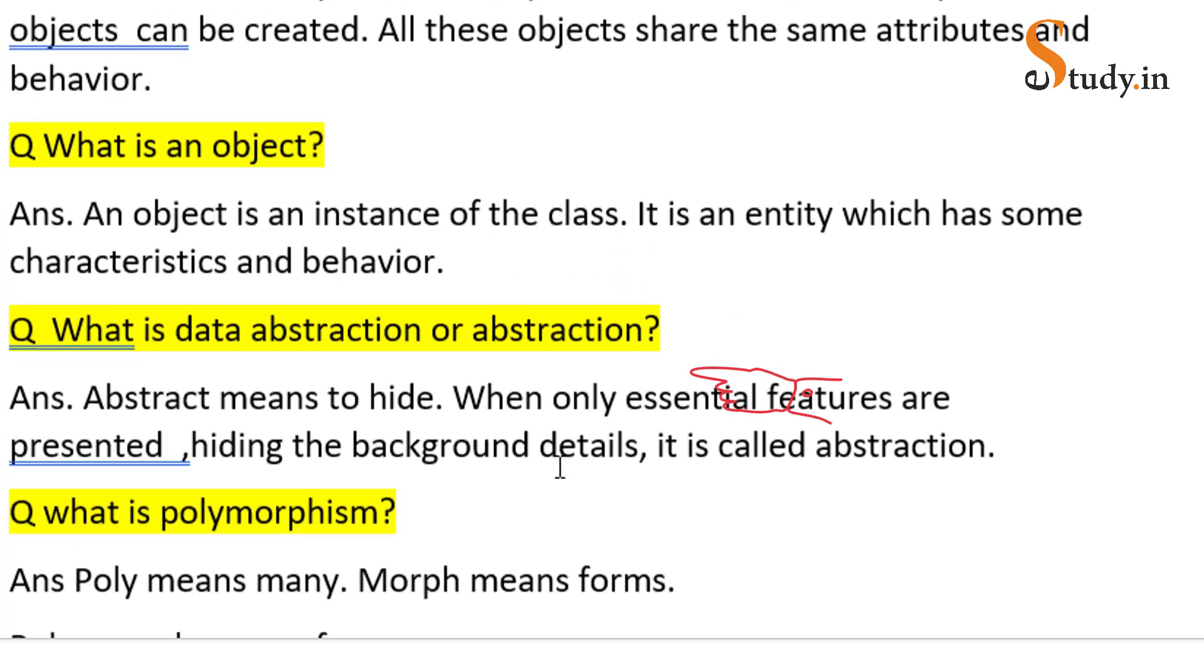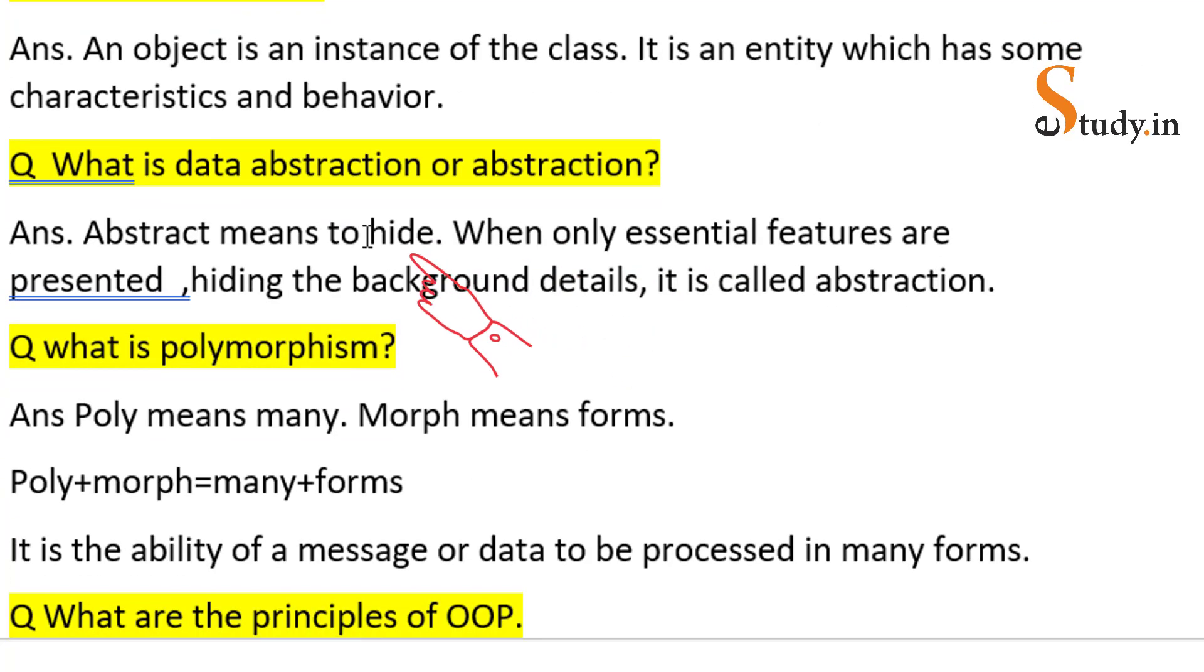What is data abstraction or simply what is abstraction? Abstraction means to hide. The English word abstract means to hide. This you need not write, I've just written so that you remember. When only essential features are presented, hiding the background details, it is called abstraction.